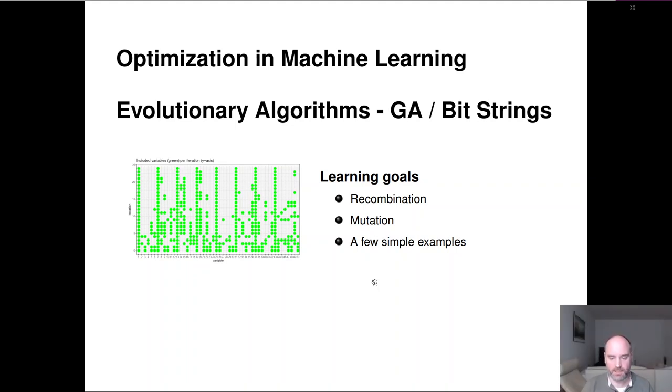Hi, and welcome to our next section here in our chapter on evolutionary algorithms. Here we'll introduce genetic algorithms and how they operate on bit strings. We'll explain recombination and mutation operators and then look at a few fairly simple examples.